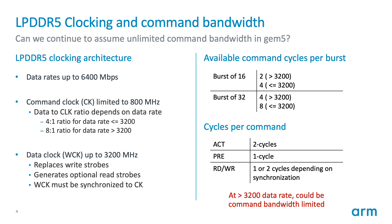There are two bursts supported: a burst of 16 and a burst of 32. The first table on this slide looks at available command cycles per burst. For a burst of 16 at higher data rates we are limited to two commands; for burst of 32 we are limited to four. Similar to other technologies, LPDDR5 requires multiple cycles for certain commands — the activate requires two cycles, a pre-charge can be issued in one, and a read or write may require one or two depending on synchronization. The main takeaway is that at data rates greater than 3200 there are cases where we may be command bus limited.